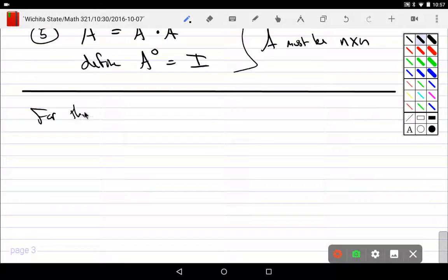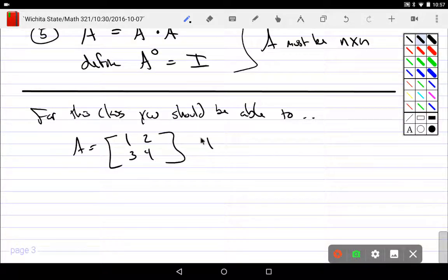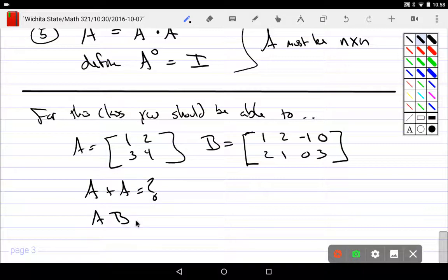So, for this class, we should be able to, we'll say A was equal to [1, 2; 3, 4], and B was equal to [1, 2, -1, 0; 2, 1, 0, 3]. And then you should be able to do things like, what is A plus A equal to? What would be A times B equal to? What is A to the 5th power? What is that equal to? You should be able to do all this sorts of stuff.